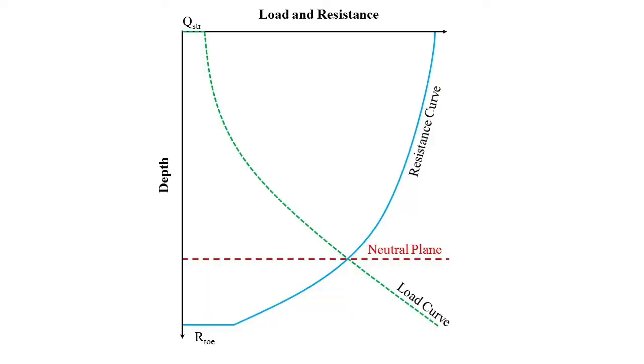To identify the location of the neutral plane, the point of intersection of the load and resistance curves must be determined within the load resistance plot.